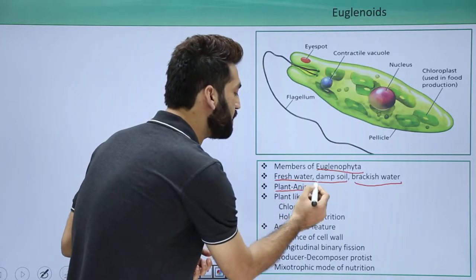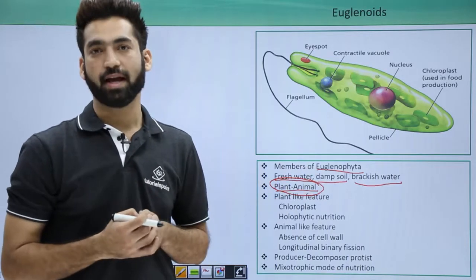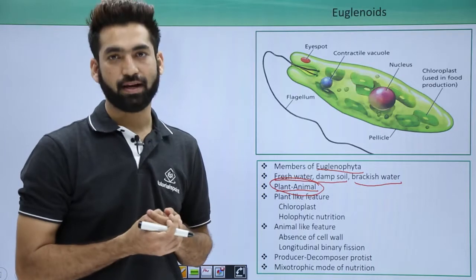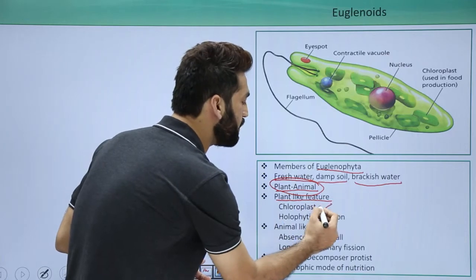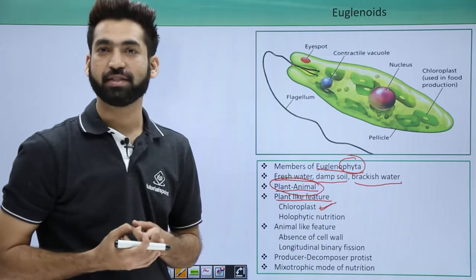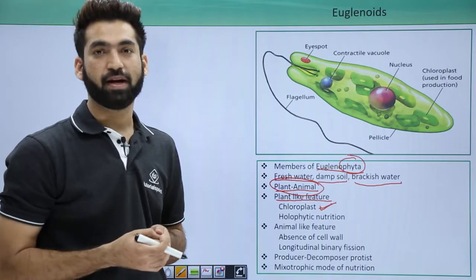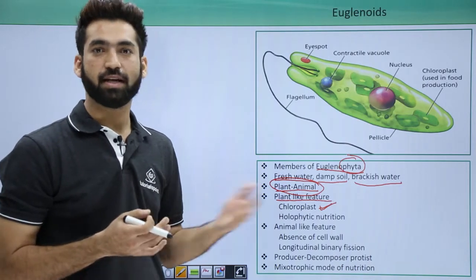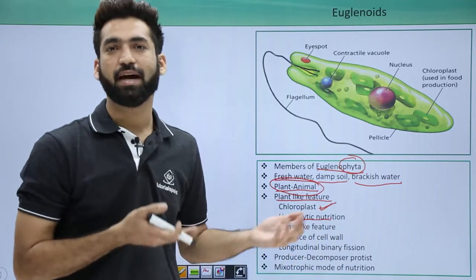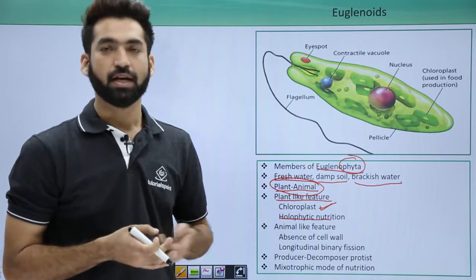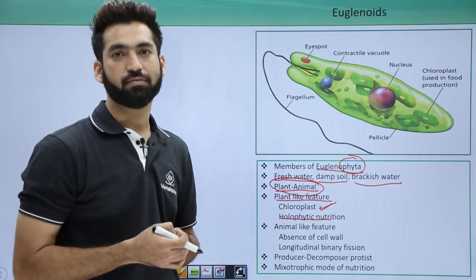They are called 'plant-animal' because they behave like plants and also like animals. Their plant-like features include having chloroplast — since they are 'phyta', they perform photosynthesis and have chloroplast with pigments. They also have a holophytic mode of nutrition, meaning they manufacture their own food using the chloroplast.